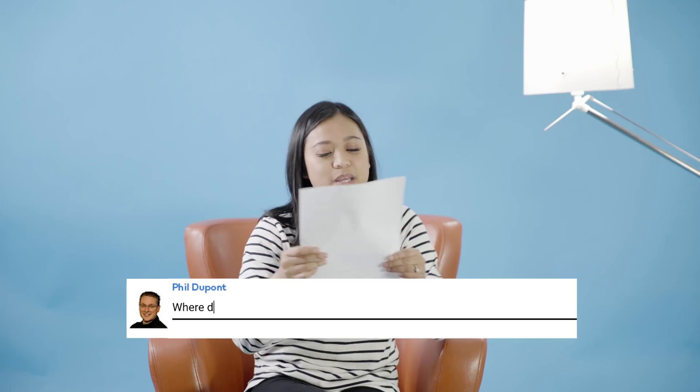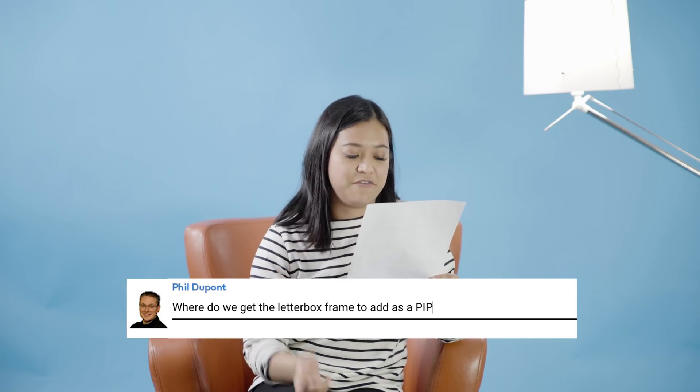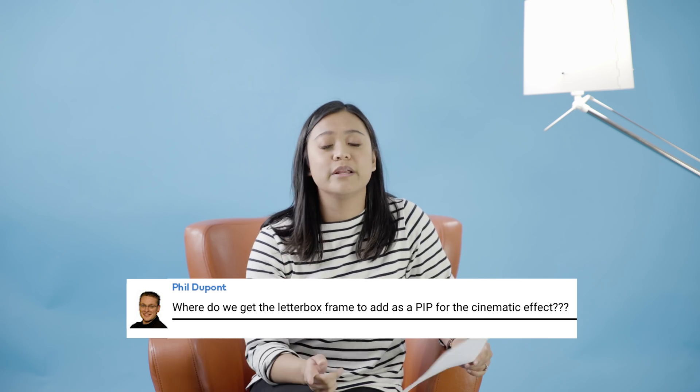Alright, let's answer our next question. It comes from Phil Dumont — shout out to you, Phil. The question is: 'Where do we get the letterbox frame to add as a PIP for the cinematic effect?' Great question. A letterbox is a frame at the top and bottom of your video to give you a really cool cinematic look, so it kind of looks like you're watching a movie.